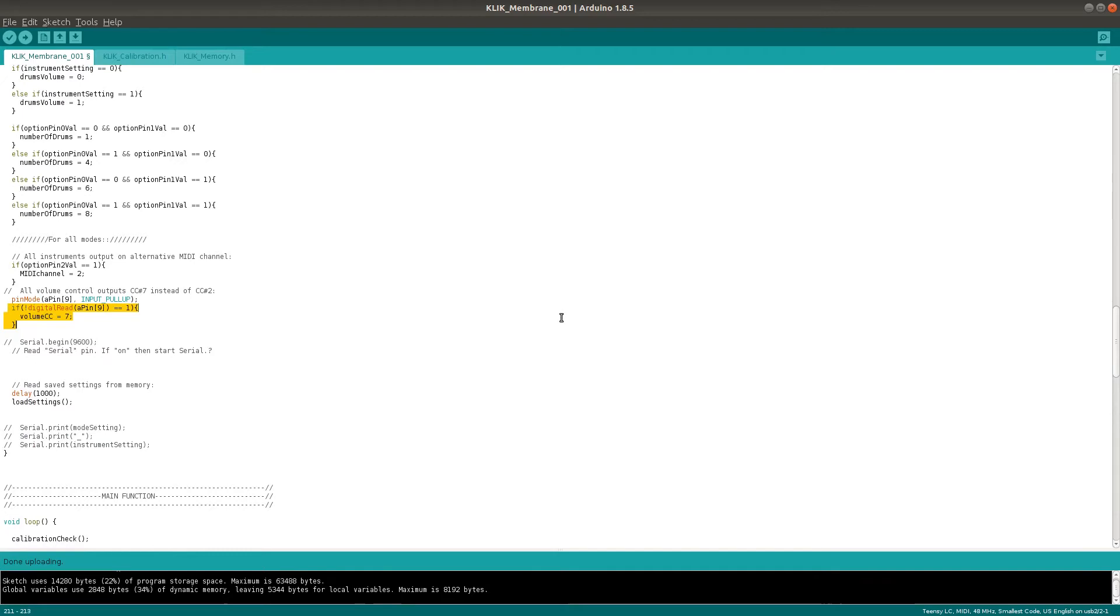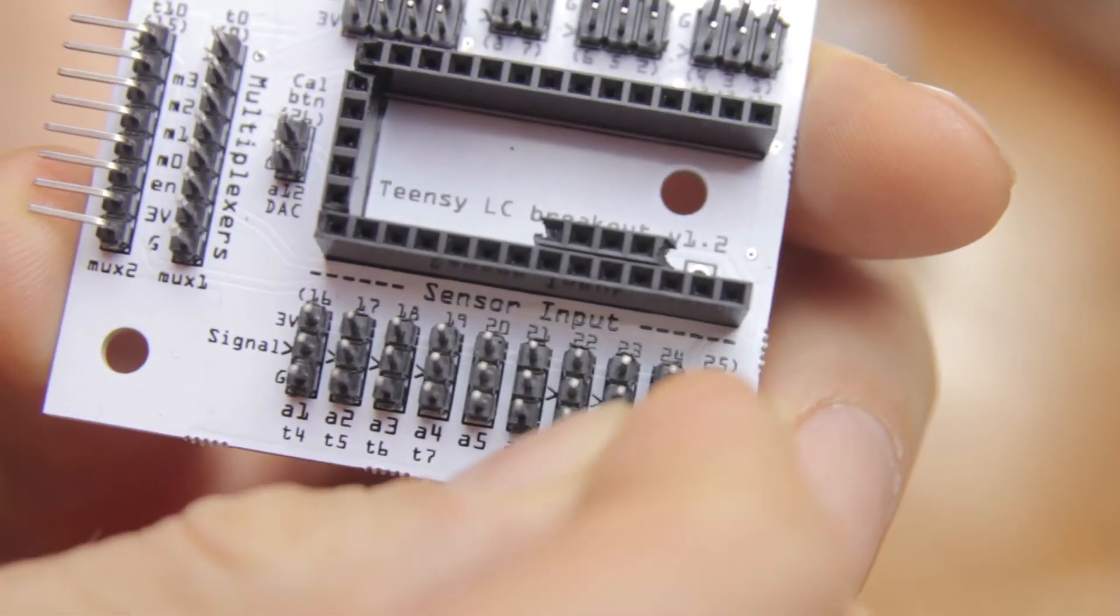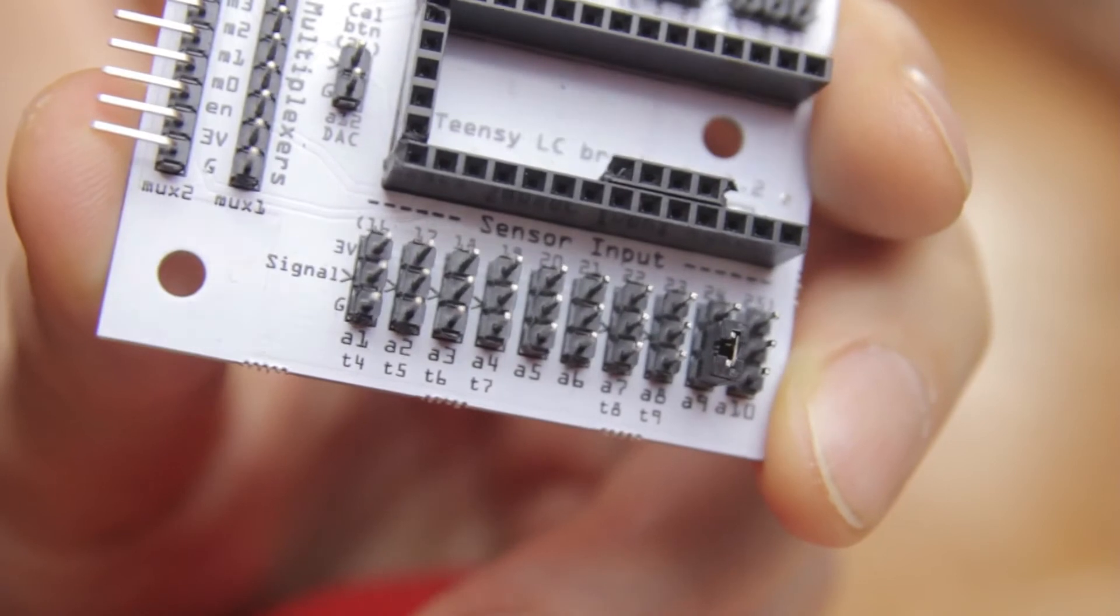it can be changed to CC number seven by inserting a jumper into the analog pin nine header between the signal and ground pins.